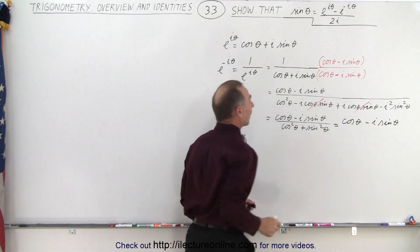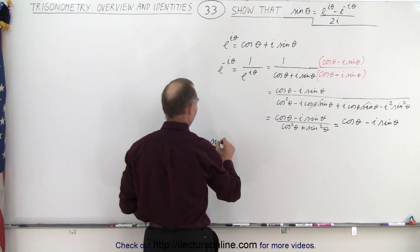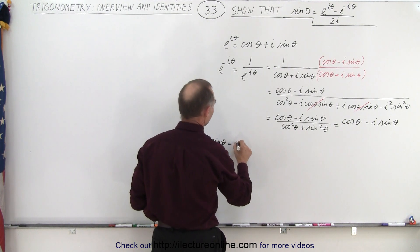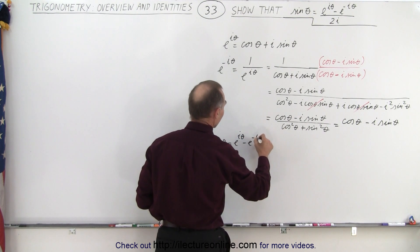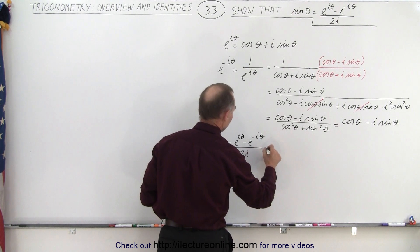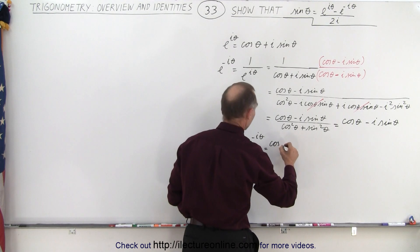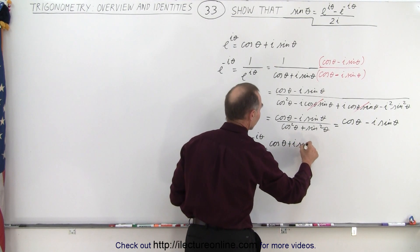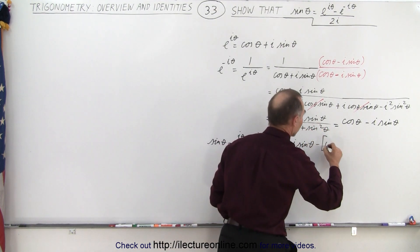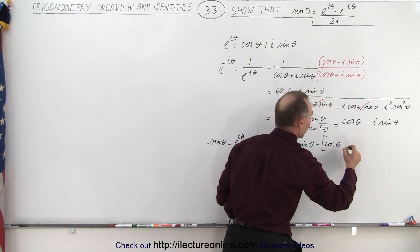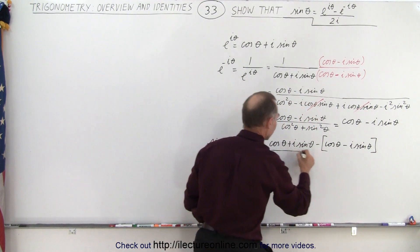This means e to the minus i theta is equal to the cosine of theta minus i times the sine of theta, and e to the plus i theta is equal to cosine of theta plus i sine of theta. Now we're ready to plug that into our equation and see what we get. So the sine of theta we claim is equal to e to the i theta minus e to the minus i theta, all divided by 2i. So e to the i theta is the cosine of theta plus i times the sine of theta, minus e to the minus i theta, which equals the cosine of theta minus i sine of theta, all divided by 2i.